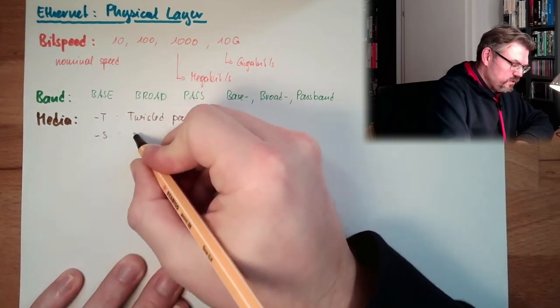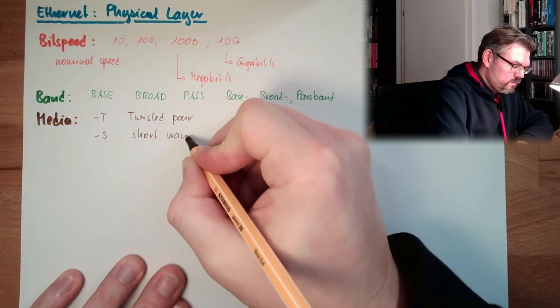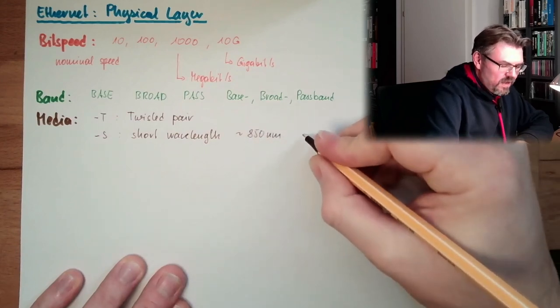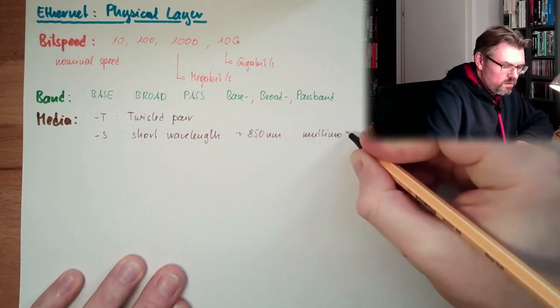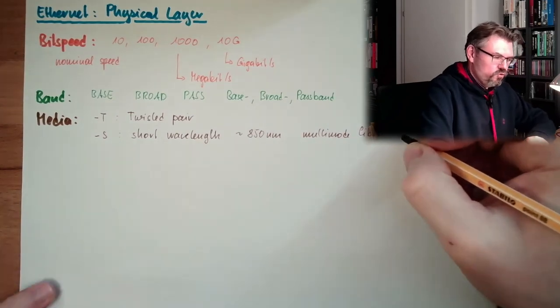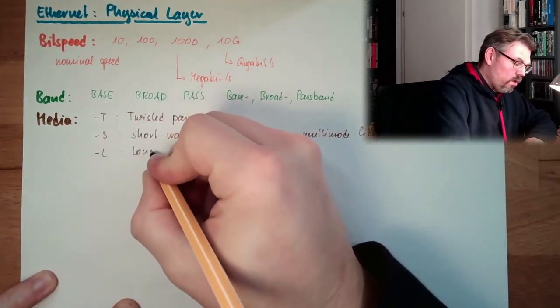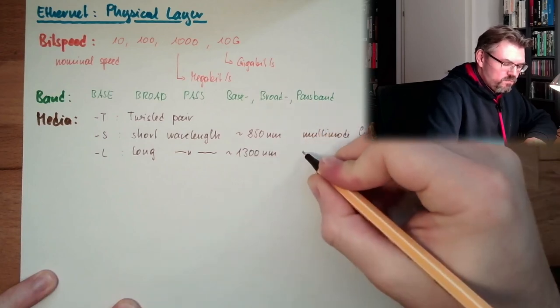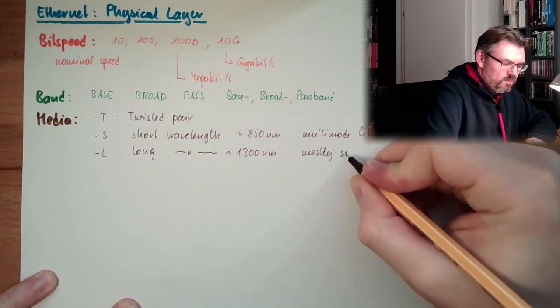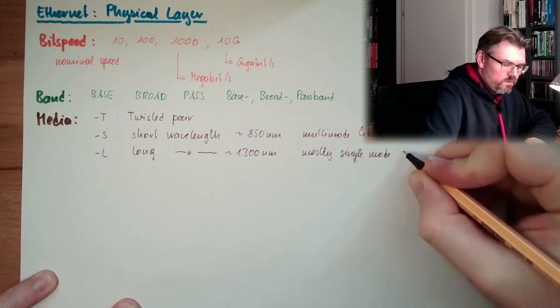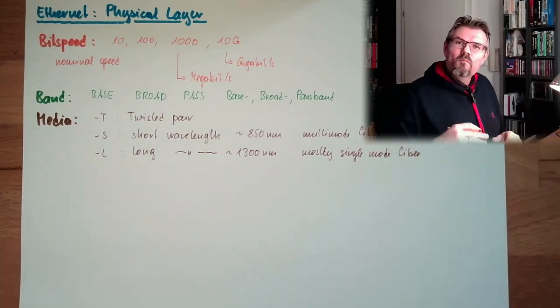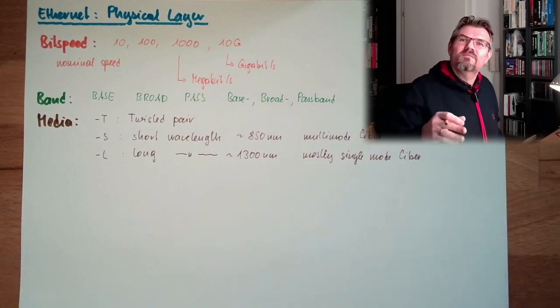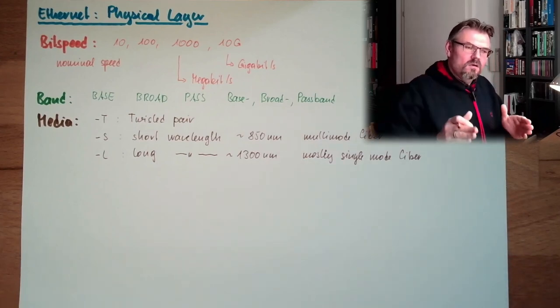Then there is also optical fiber specified. There is, for instance, S, it's short wavelength. This is around 850 nanometers wavelength, optical wavelength, and usually in multi-mode fiber cables. This is S. Then we have an L, this is long wavelength, this is around 1300 nanometers, and this is mostly single mode.